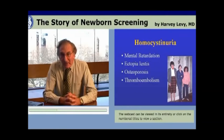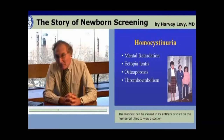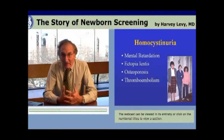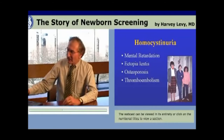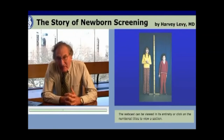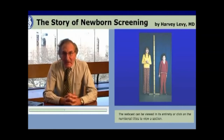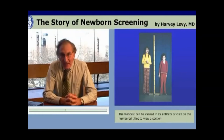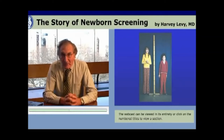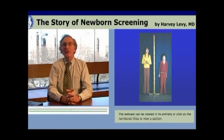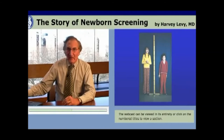Another inborn error of metabolism in that category is homocystinuria. It produces mental retardation, ectopia lentis — dislocation of the ocular lenses — osteoporosis, and thromboembolism. Methionine is the elevated amino acid in homocystinuria, so Guthrie modified his bacterial assay to respond to methionine, and this was added to newborn screening in a few states. Here are a brother and sister with homocystinuria: the sister has the full clinical complications because she was born before newborn screening, while her brother was identified through newborn screening, treated early with a low-methionine diet, and is far better off.